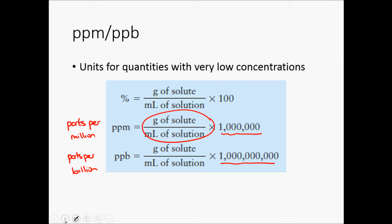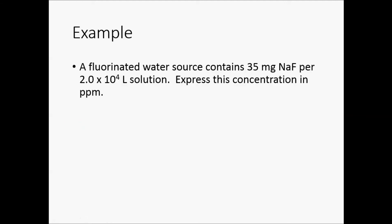So, for example, if I have a fluorinated water source, and I have 35 milligrams of NaF per 2 times 10 to the 4 liters, the number of ppm is the mass of my solute, so NaF in grams, over the number of milliliters of solution times 10 to the 6.